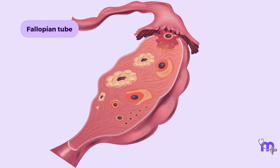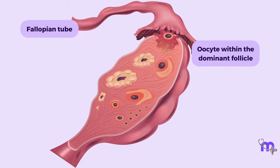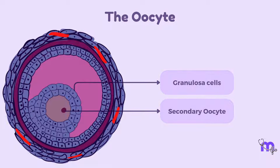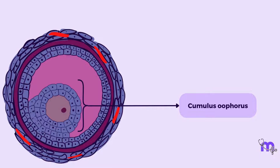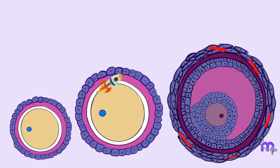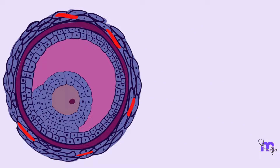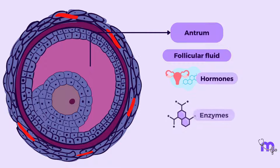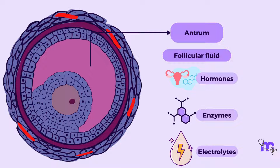Within this chosen dominant follicle, the oocyte undergoes maturation. The oocyte is surrounded by a layer of granulosa cells, forming a structure known as the cumulus oophorus, which provides nourishment and support to the growing oocyte. As the follicle matures, it increases in size and develops a cavity called the antrum, containing follicular fluid with various factors like hormones, enzymes, and electrolytes necessary for the oocyte's development and survival.